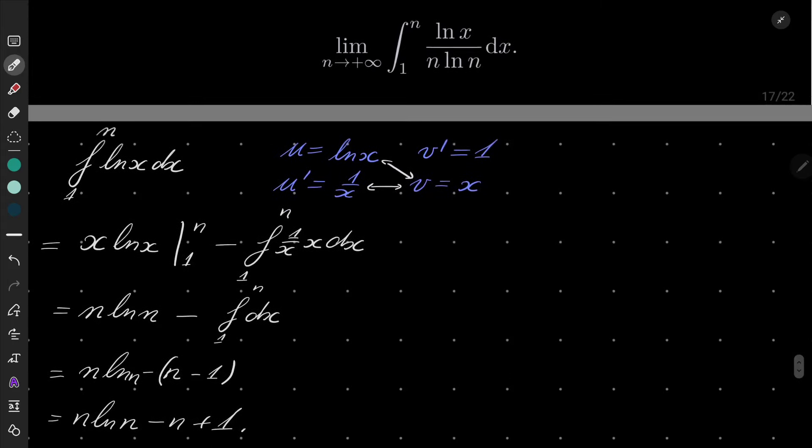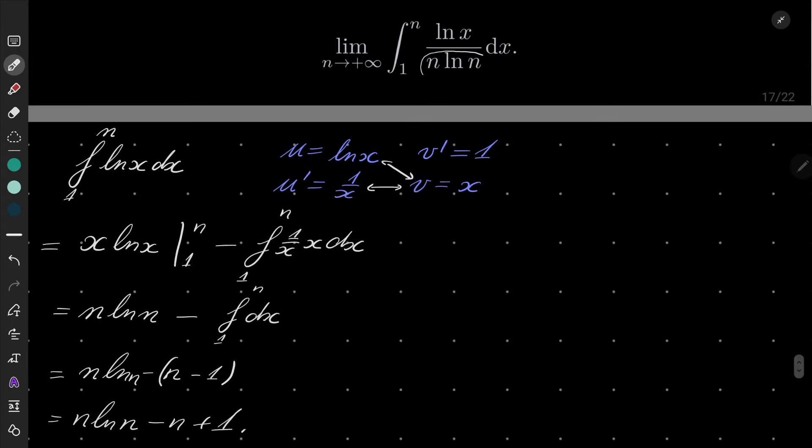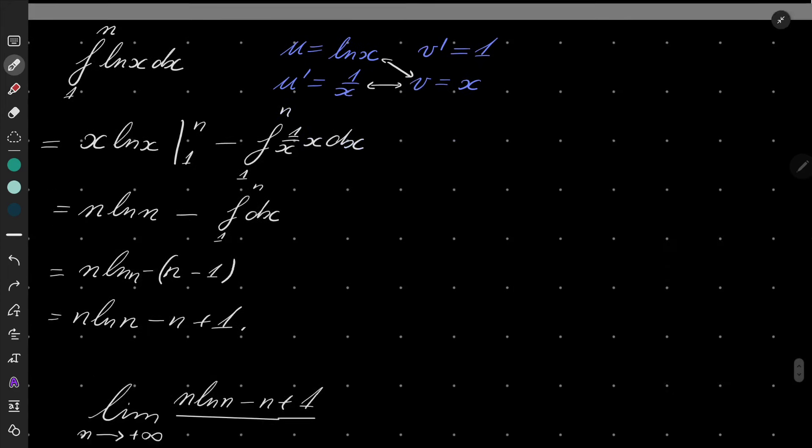And in the denominator, let's take a look. This is just a constant. This does not depend on x, so it's n ln n.